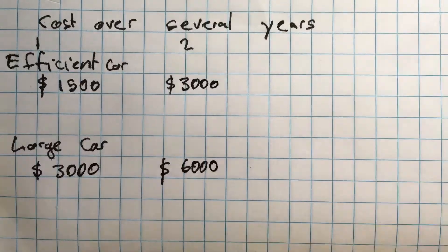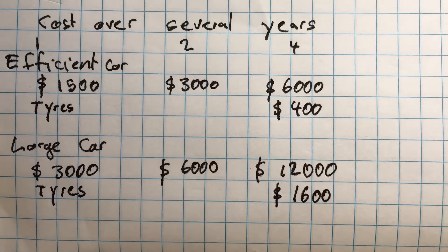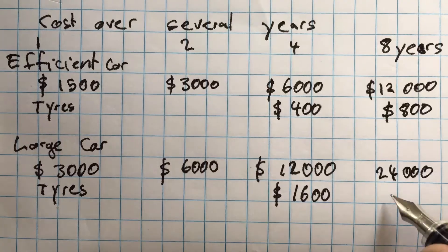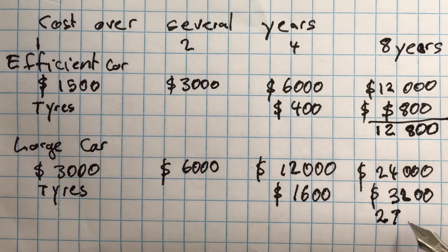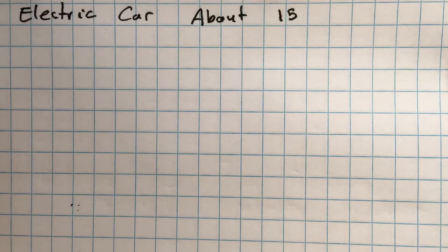I did the calculations to work out how much these cars will cost, including petrol and tyres—new tyres at four years and at eight years. Owning the car for eight years comes to $12,800 and $27,200 for a larger car.